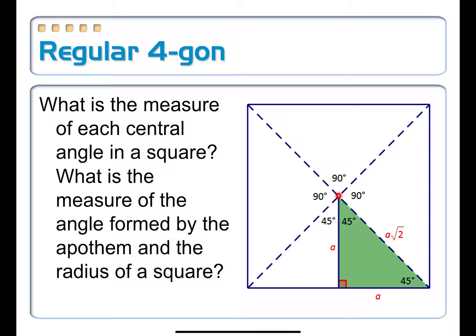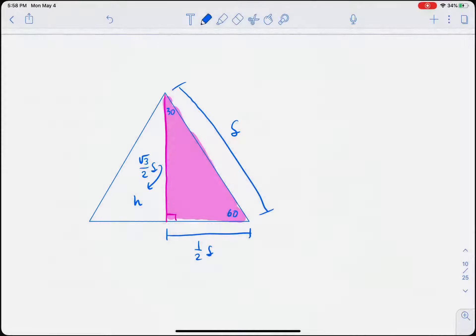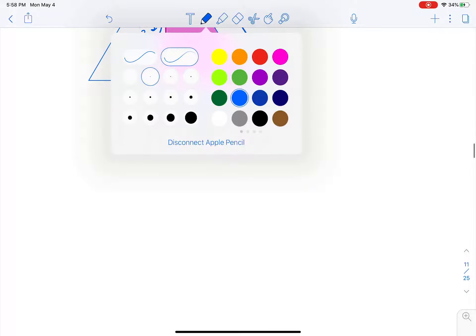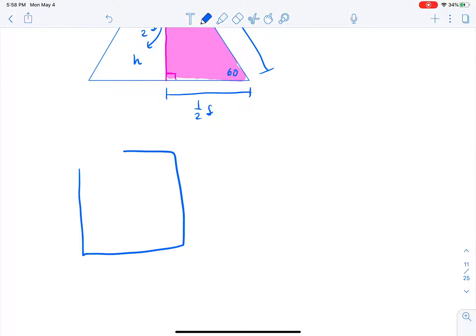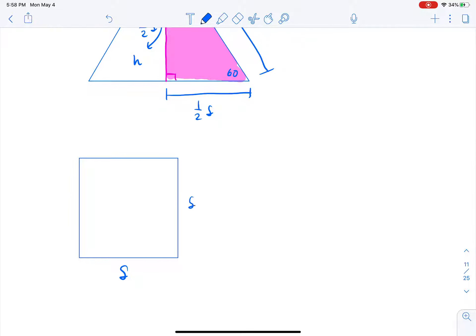Another relationship for a square: the apothem is exactly half of the whole side length. This is overkill for a square since we have the easy formula: area equals side length squared.